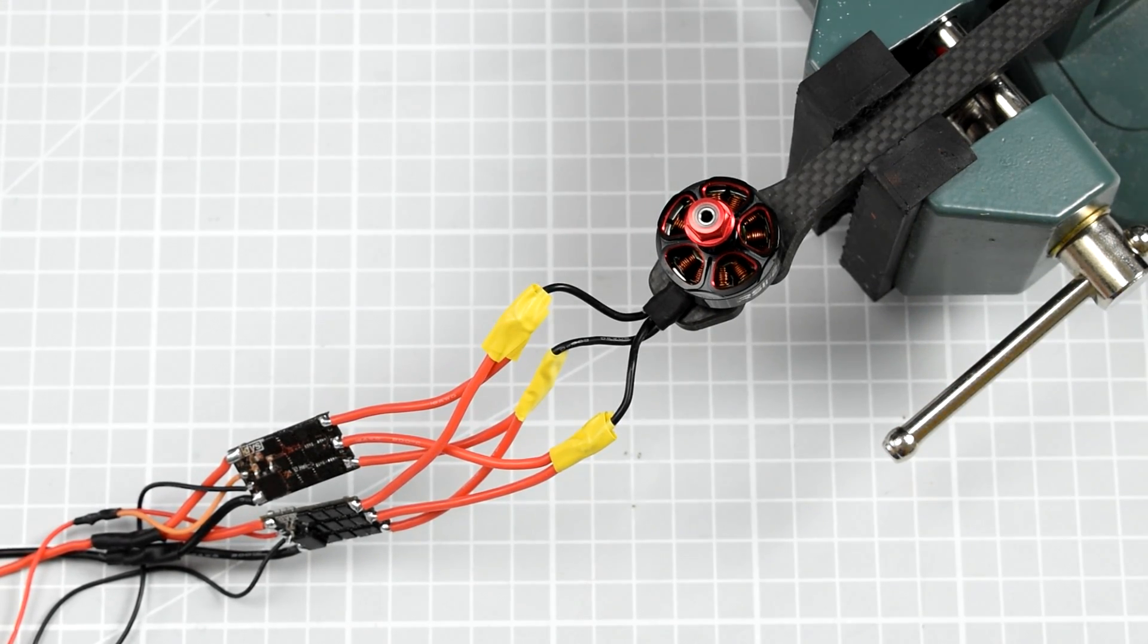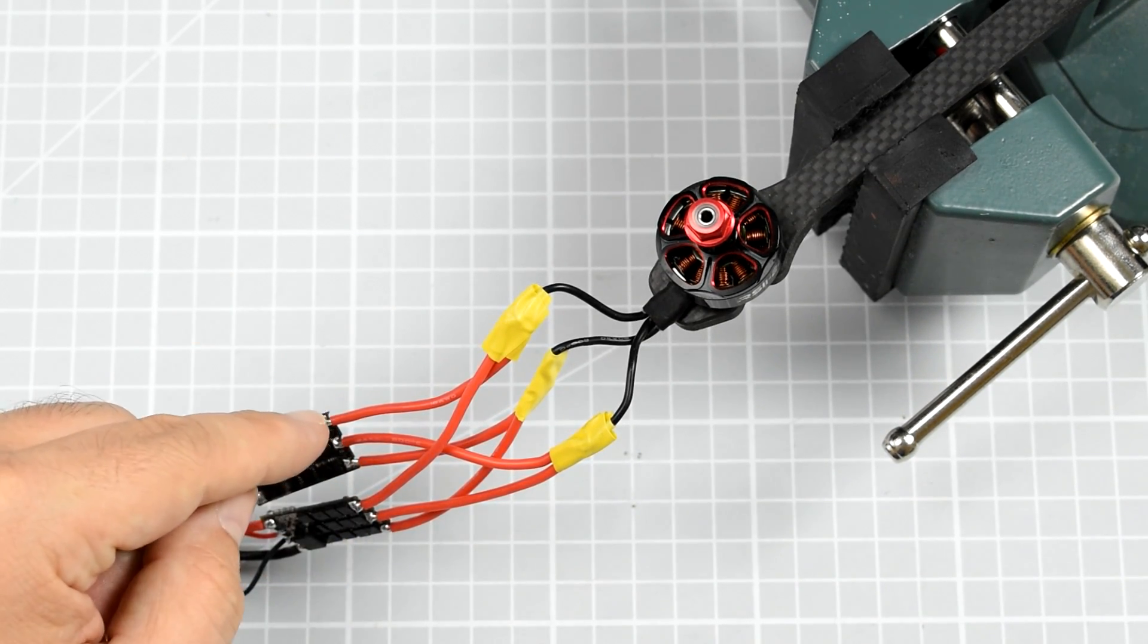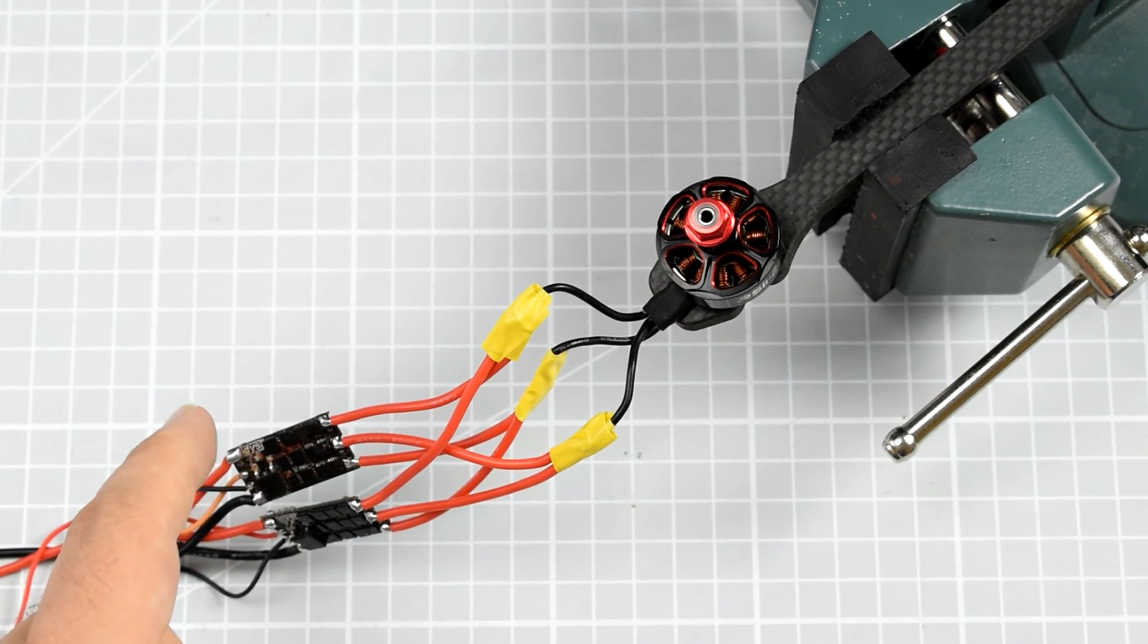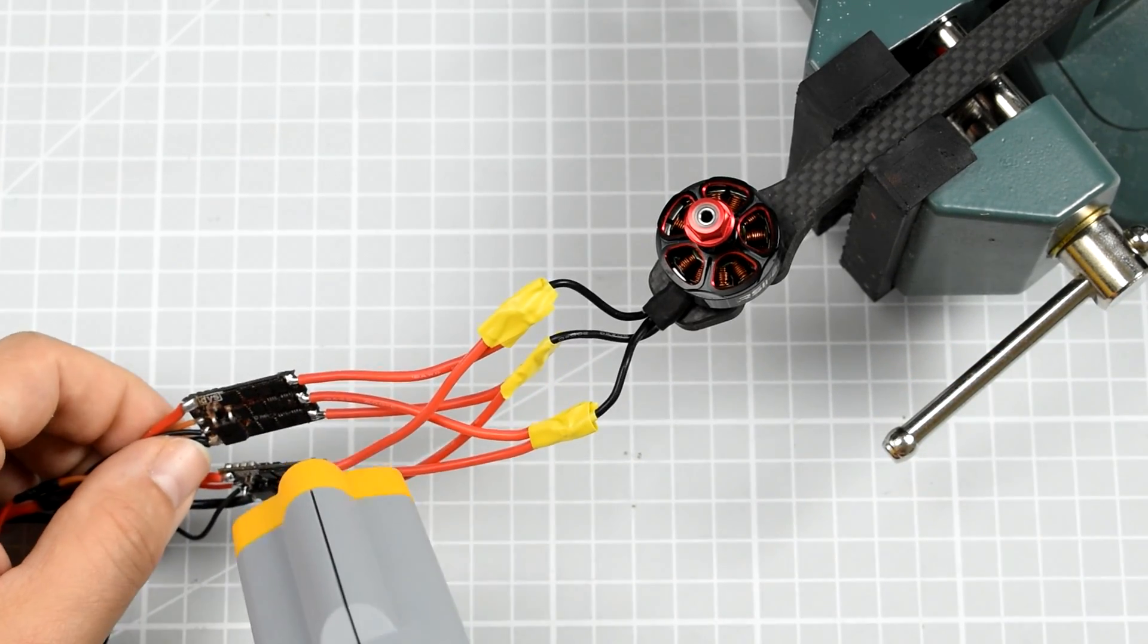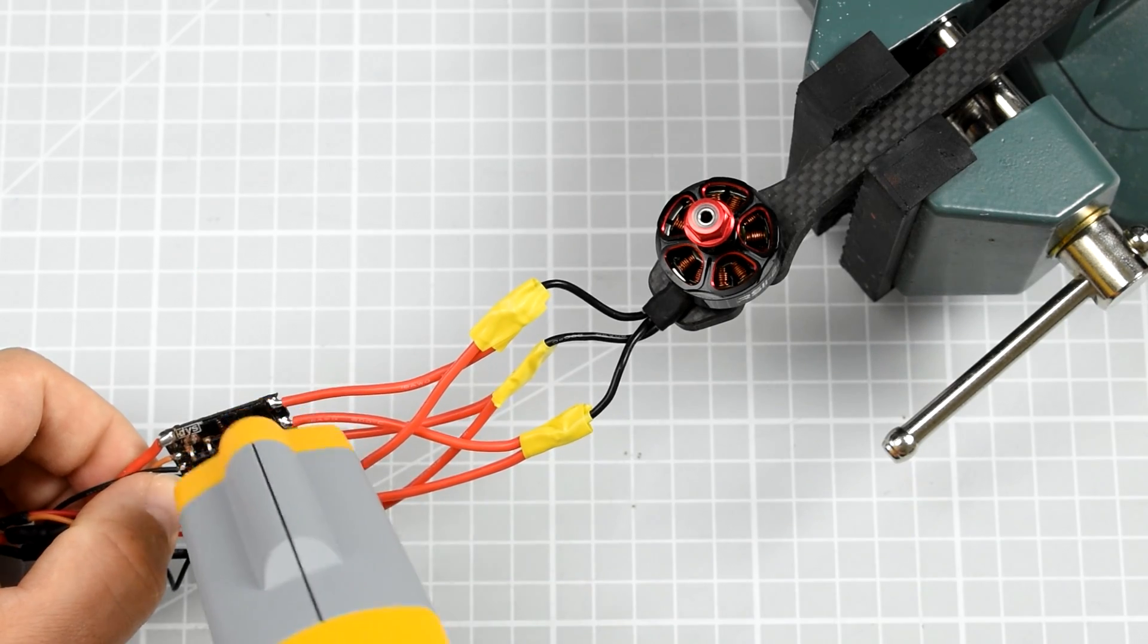My suspicion is that I got the phases wrong on the ESCs. One ESC tries to rotate the motor counterclockwise and the second one tries to rotate it counterclockwise, and as a result they just do not work. Let me measure the temperature on the ESCs. 40 degrees.